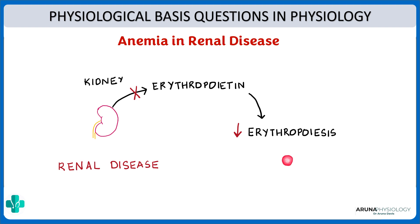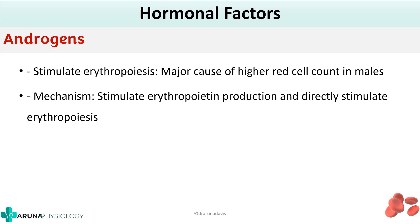Moving on to the other hormonal factors affecting erythropoiesis — androgens. What do androgens do? Androgens stimulate erythropoiesis. That is why there is a higher red cell count in males, because androgens stimulate erythropoietin. The mechanism is that they stimulate erythropoietin production, and not only that, they can also themselves directly stimulate erythropoiesis. So androgens have a stimulatory effect on erythropoiesis.